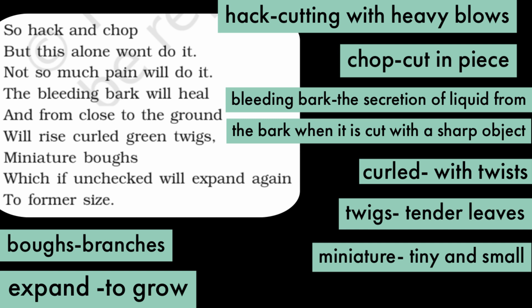In this stanza the poet further states the ways of cutting a tree. Hack and chop, but this alone won't do it — as the jab of the knife was insufficient, the poet advises hitting the tree severely through hacking and chopping, but contrasts that even that won't be enough to kill the tree. This would cause pain to the tree but is not good enough to kill it.